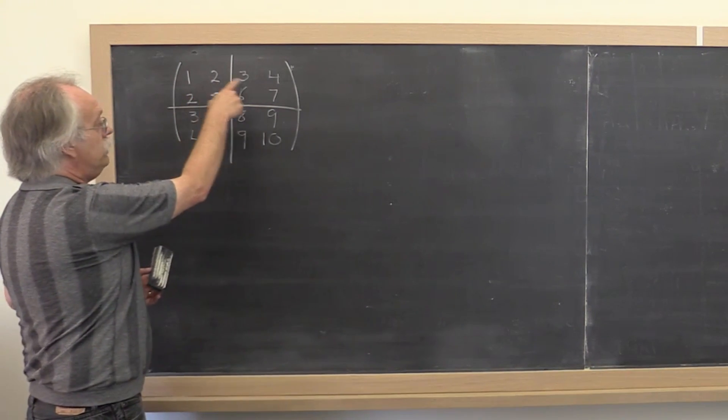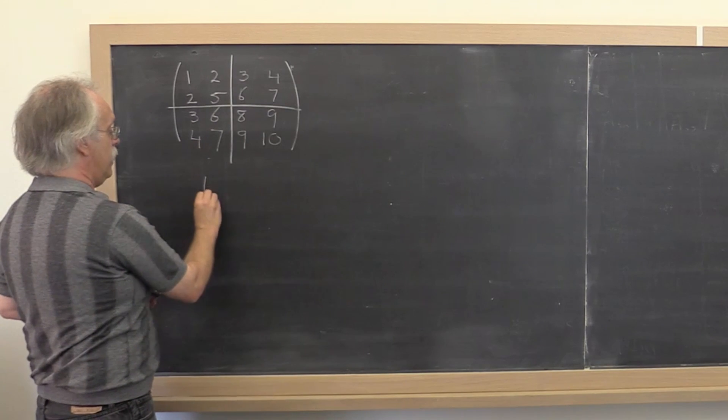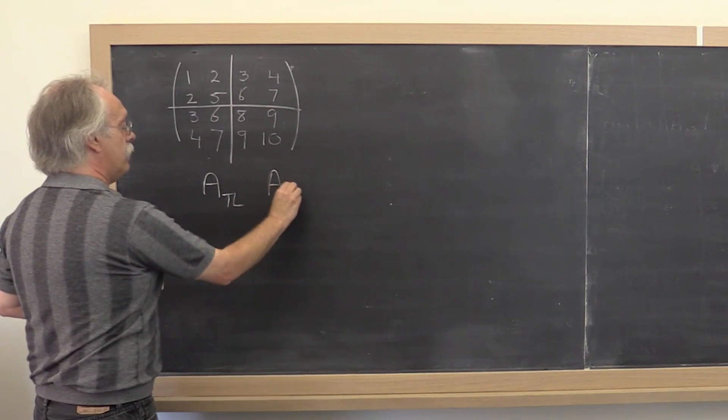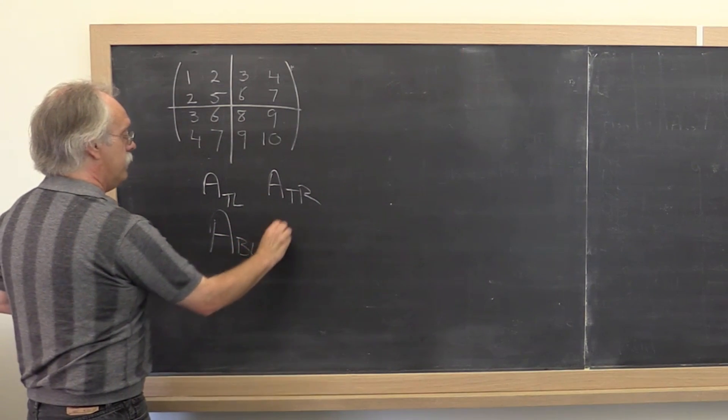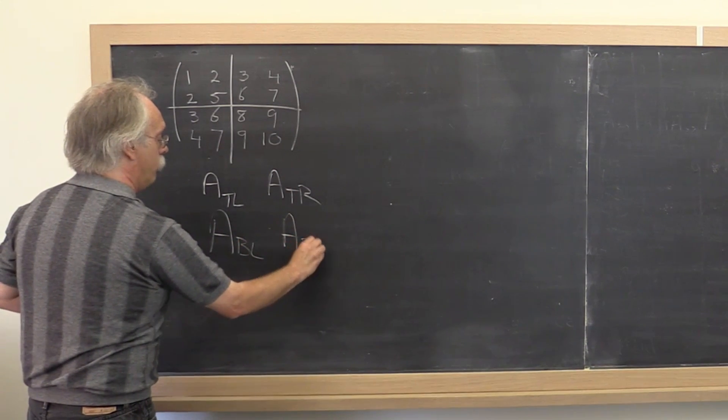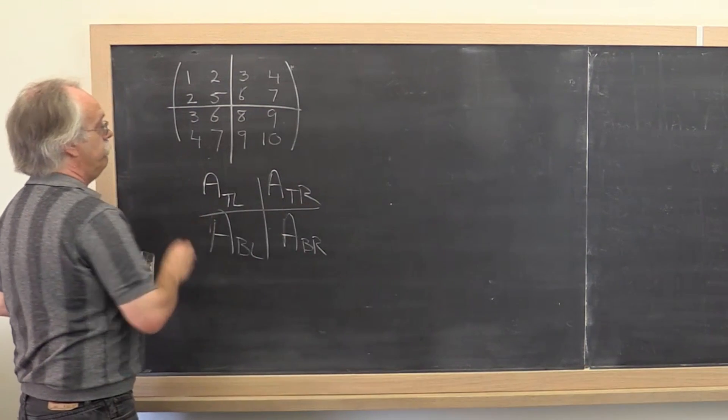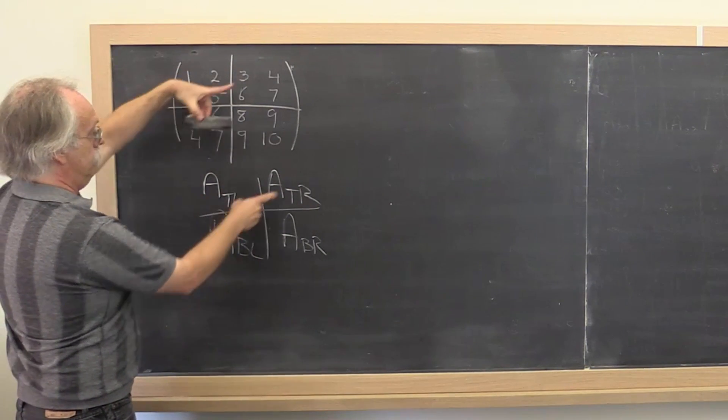We can label these different pieces of the matrix as A top left, A top right, A bottom left, and A bottom right.